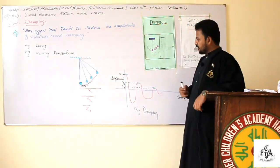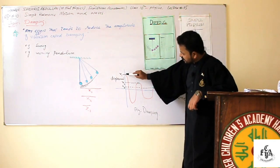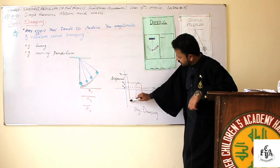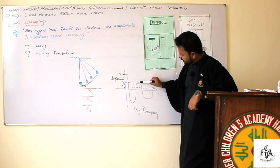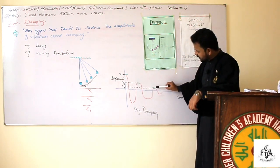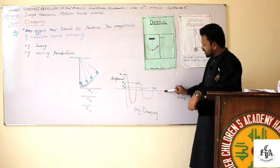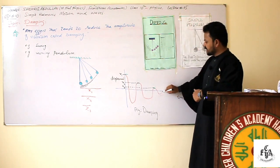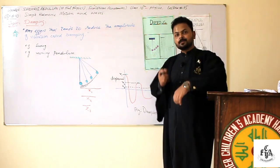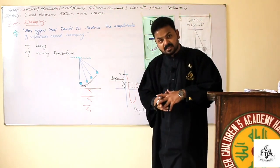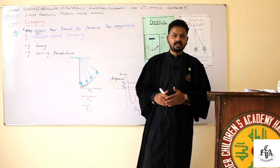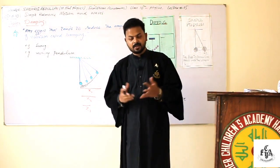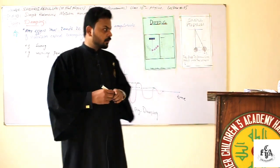If we plot the graph, initially the amplitude was quite high at x1. In the second case it reduced to x2, in the third case it further reduced to x3, and finally it stopped. So the process in which the amplitude of oscillation decreases with the passage of time is known as damping.